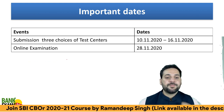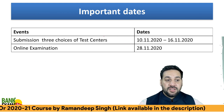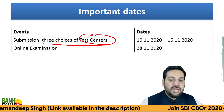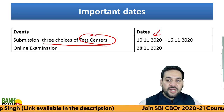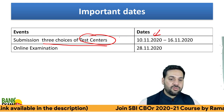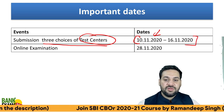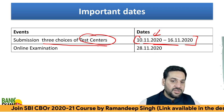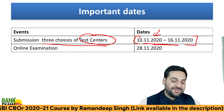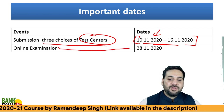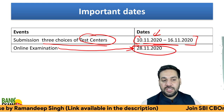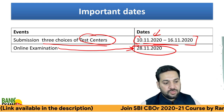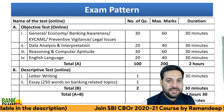So important dates. Submission of three choices of test center — this is a very good thing that SBI allows you to choose your exam center. You can make a choice of three centers from 10th to 16th of November. Do it as early as possible so that you can get your favorite, nearby exam center. The online exam is going to be held on 28th of November 2020. So you don't have that much time — just 18 days left.